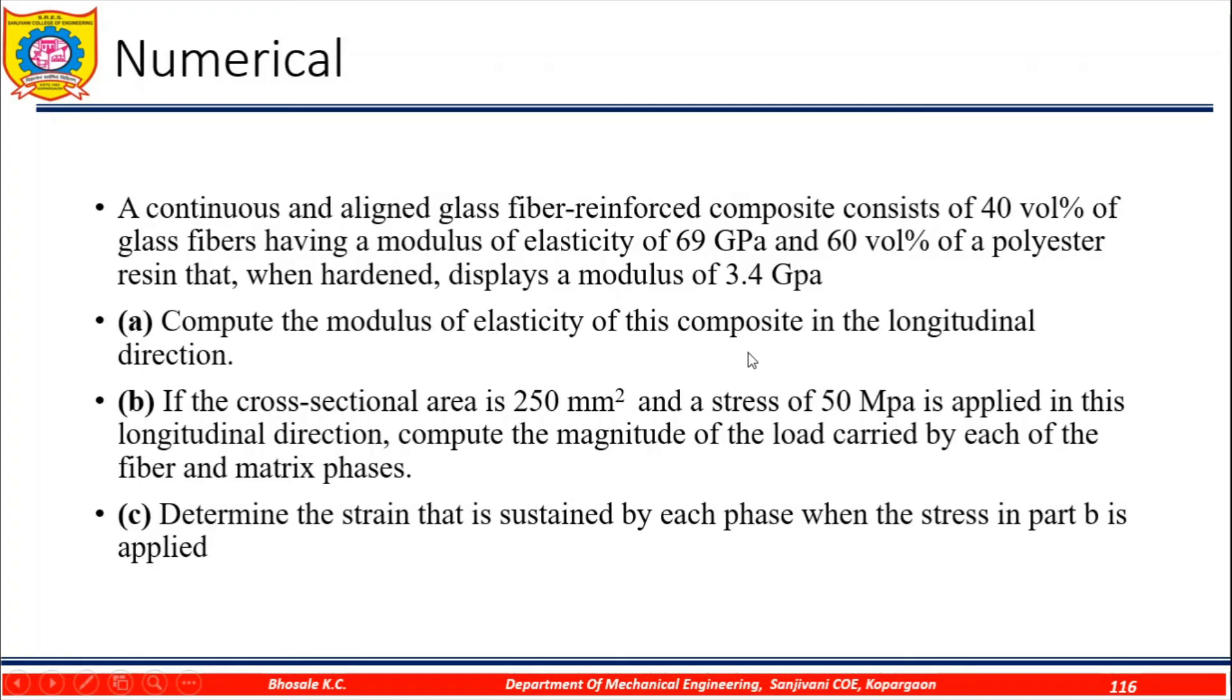Continuous and aligned glass fiber reinforced composite consists of 40 volume percent of the glass fibers having a modulus of elasticity of 69 gigapascal and 60 volume percentage of the polyester resin that when hardened displays a modulus of 3.4 gigapascal. Compute the modulus of elasticity of this composite in the longitudinal direction. If the cross section area is 250 mm square and the stress of 50 megapascal is applied in the longitudinal direction, compute the magnitude of load carried by each of the fiber and matrix phases. Determine the strain that is sustained by each phase when the stress in part B is applied.